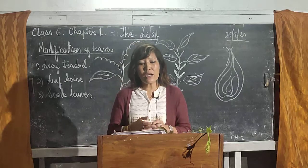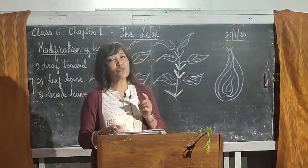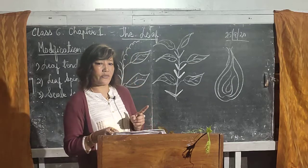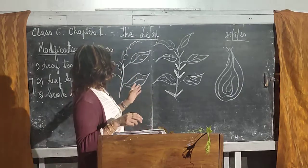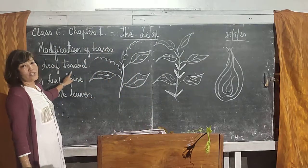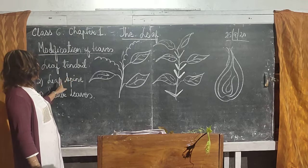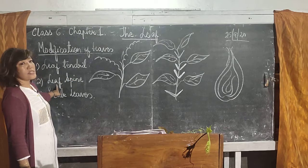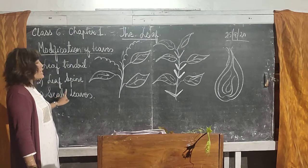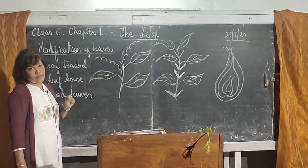Today we are going to discuss the three modifications of leaves. Number one is leaf tendril, number two is leaf spine, and number three is scale leaves.